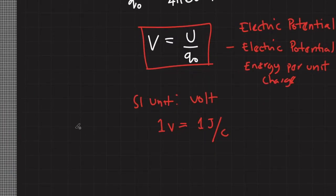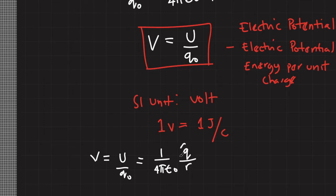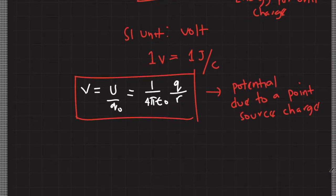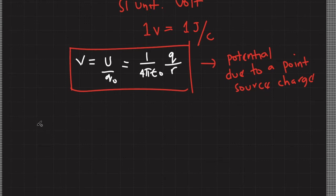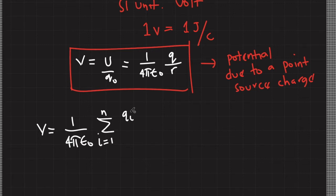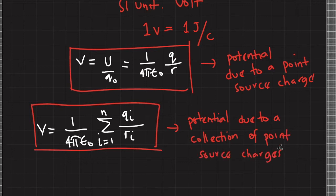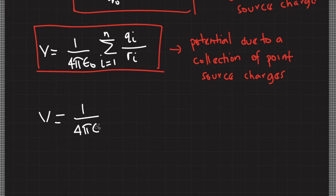When you have a single source charge — a point charge — the electric potential is equal to 1 over 4π epsilon naught times Q over R, where Q is the charge of the source charge. When you have a collection of point source charges, we can use the superposition principle and simply add up the influence of each charge. When we have a continuous distribution of charge, this summation becomes an integral.